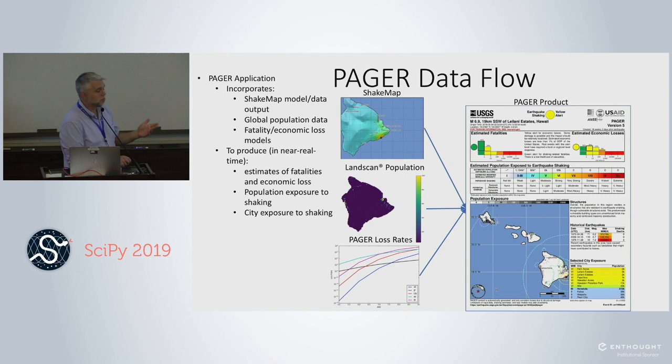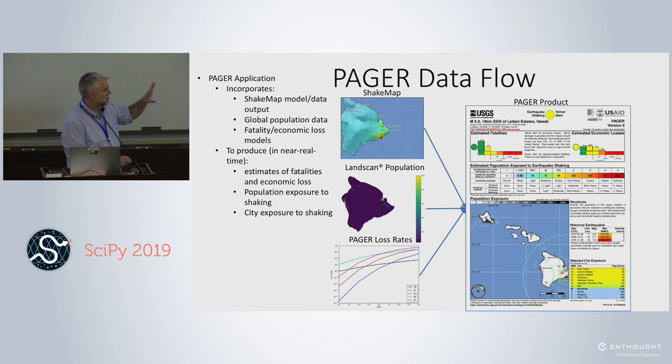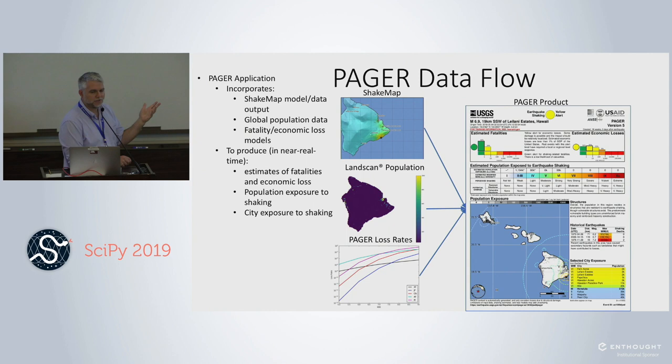The PAGER data flow takes ShakeMap, the LandScan gridded population dataset, and loss rates, convolves them together, and produces an information product. The goal is to summarize the human impacts of an earthquake on one page, with the understanding that knowing only the magnitude is really not enough to determine what the impact is on human populations. We came up with an alert scale — green, yellow, orange, red — covering both fatalities and economic loss.